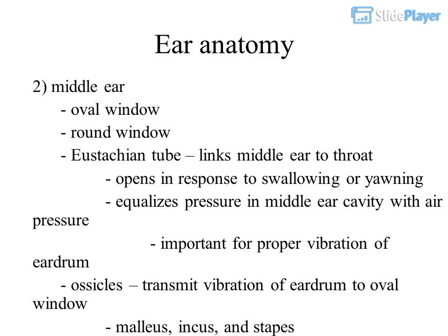The middle ear contains the oval window and round window. The Eustachian tube links the middle ear to the throat, opening in response to swallowing or yawning. It equalizes pressure in the middle ear cavity with outside air pressure, which is important for proper vibration of the eardrum.